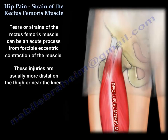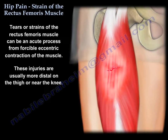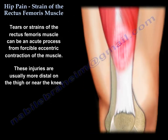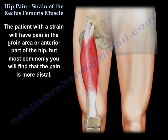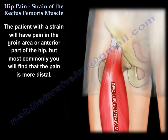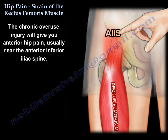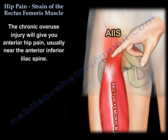Strains of the muscle can be an acute process from forcible eccentric contraction, but these injuries are more distal on the thigh or near the knee. Patients with a strain will have pain in the groin or the anterior part of the hip, but most commonly the pain is found more distally. The chronic overuse type will give hip pain, usually near the anterior inferior iliac spine.